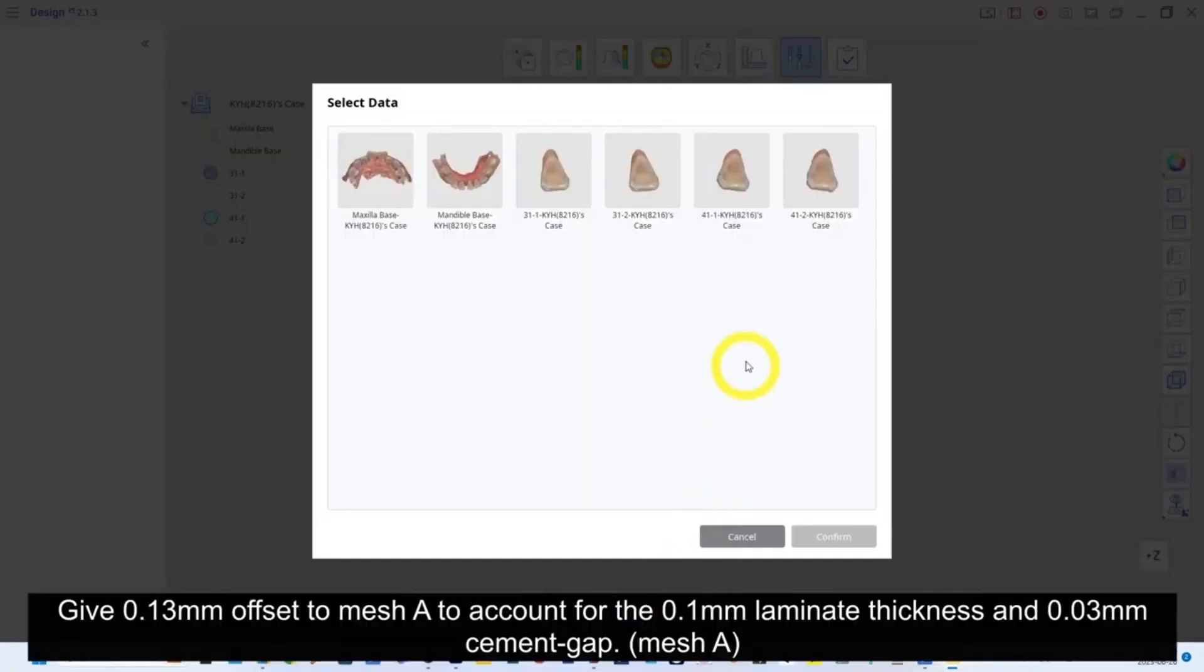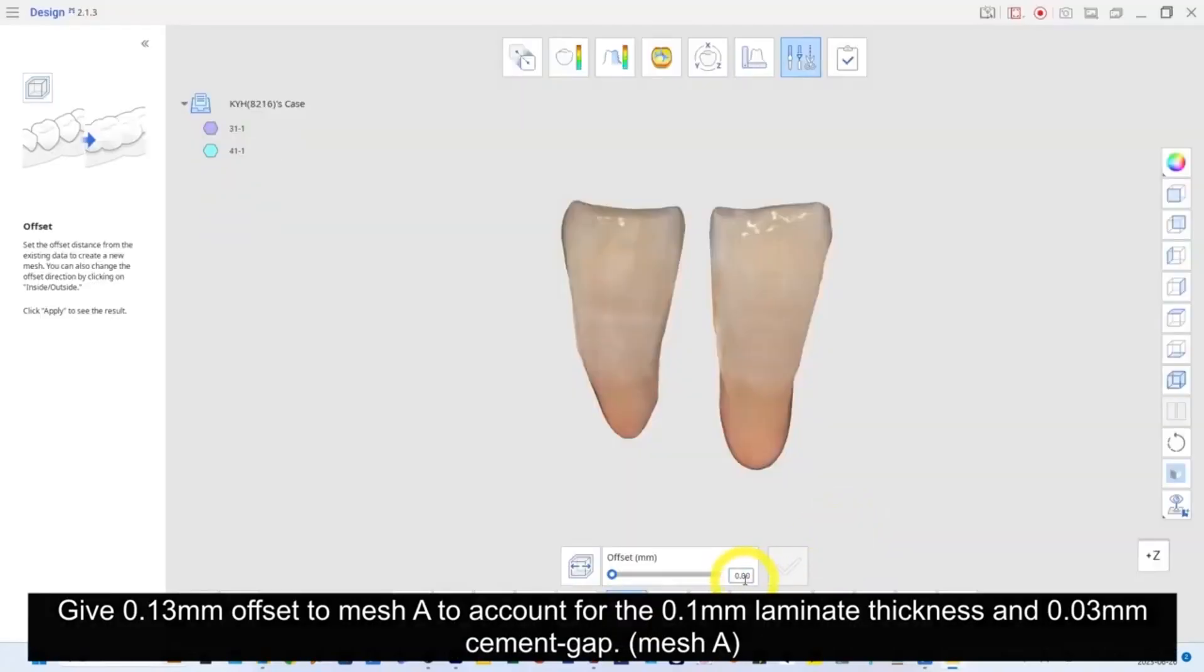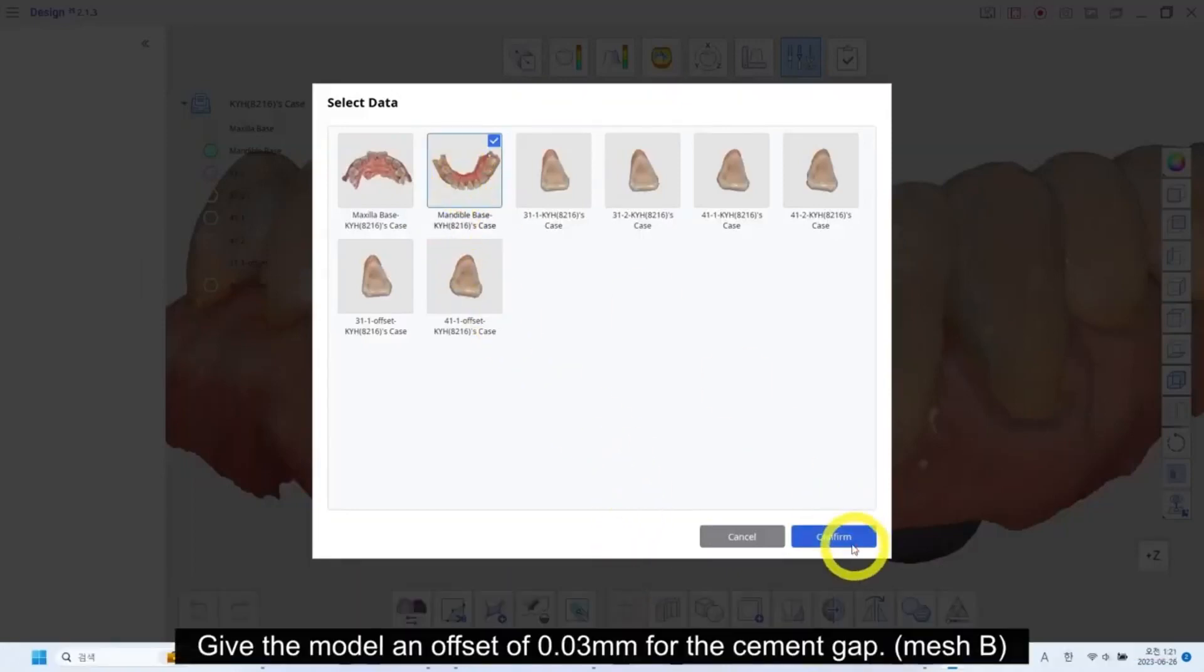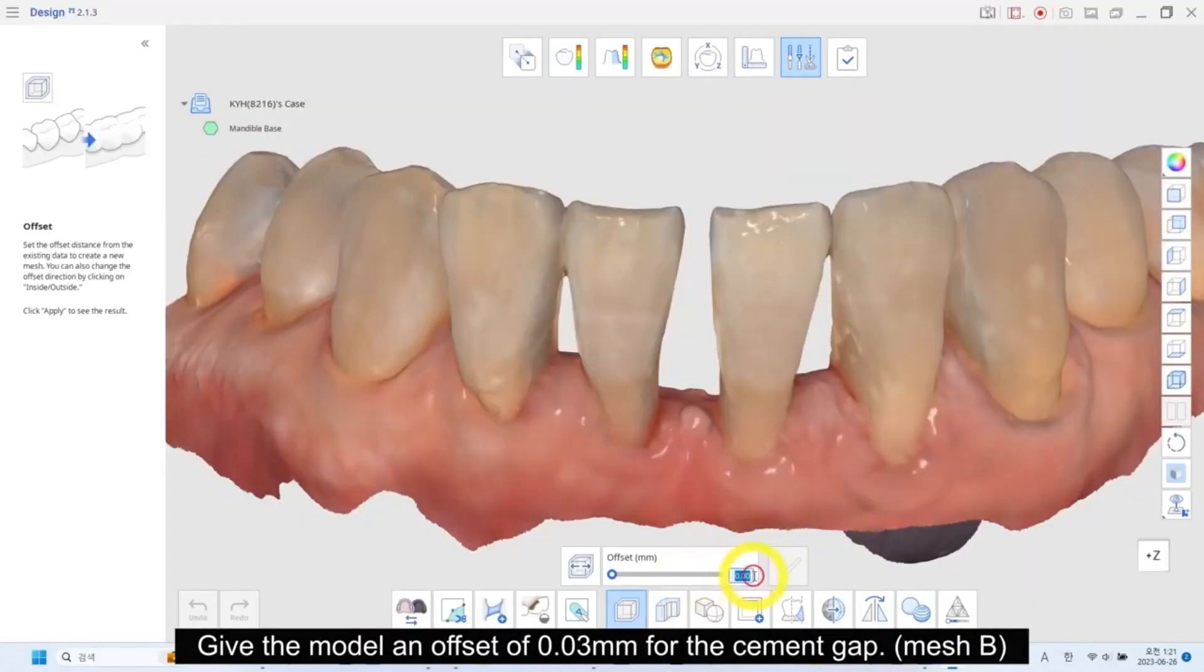Give 0.13mm offset to mesh A to account for the 0.1mm laminate thickness and 0.03mm cement gap. Give the model an offset of 0.03mm for the cement gap.